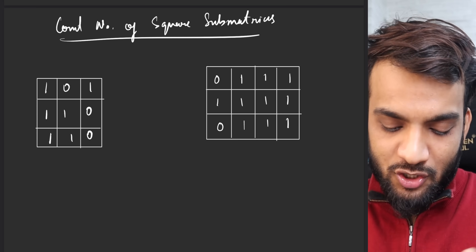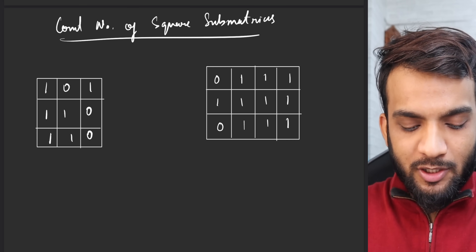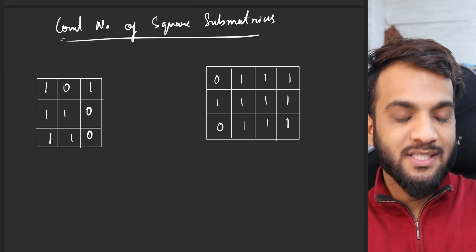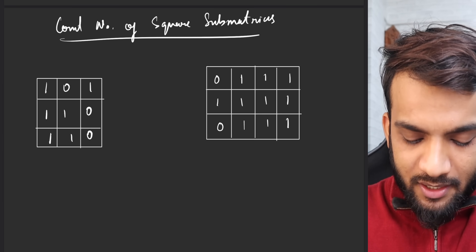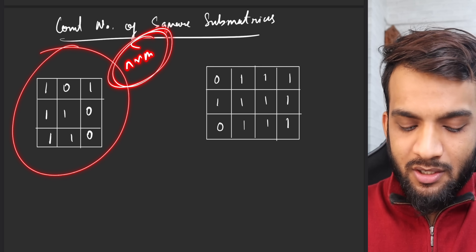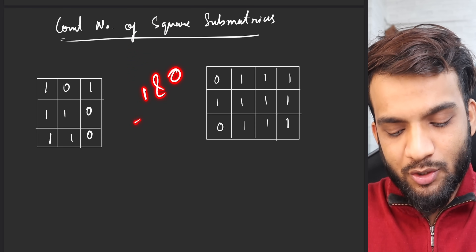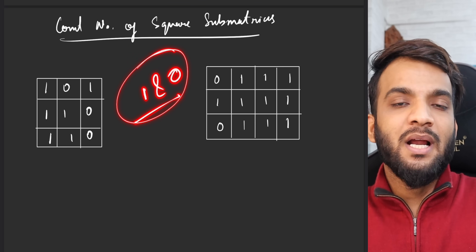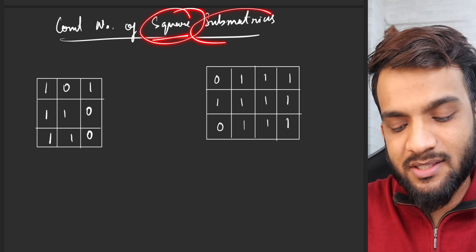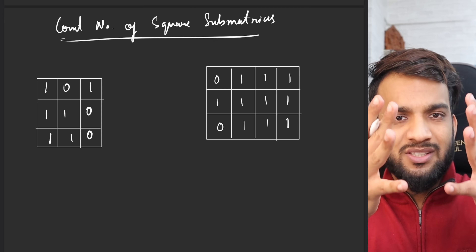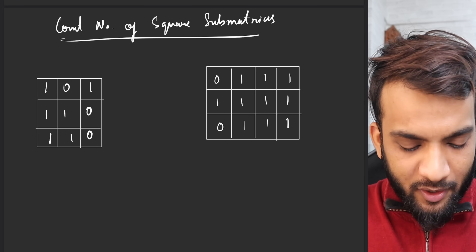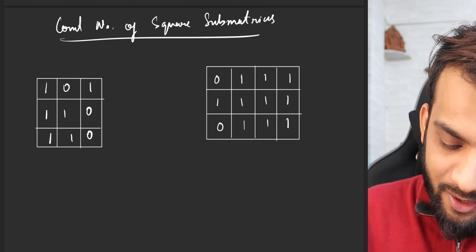Hey everyone, welcome back to Take You Forward. Today we will be solving the problem 'Count Number of Square Submatrices'. The question states: you will be given an N×M matrix filled with ones and zeros, and you have to figure out how many square submatrices there are — a square being a matrix whose length is equal to its breadth.